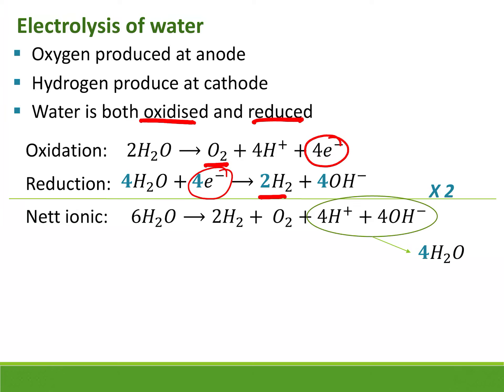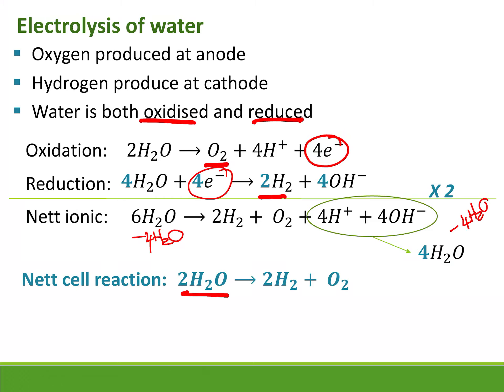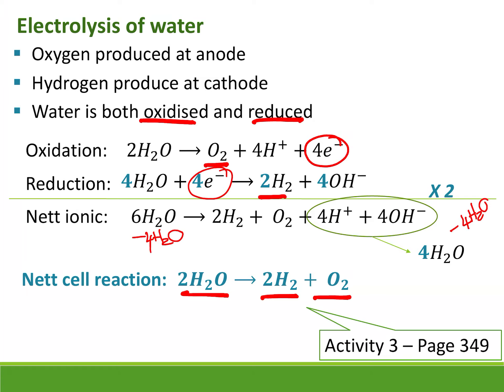To balance the reaction, we multiply the reduction reaction by two to get four electrons on each side. Those electrons cancel out. The H⁺ and OH⁻ combine to form H₂O, and since we never have the same substance on both sides, we subtract the water — leaving us with just hydrogen and oxygen. It's actually fairly straightforward. Please now do Activity 3 on page 249 — the answers are in Teams.